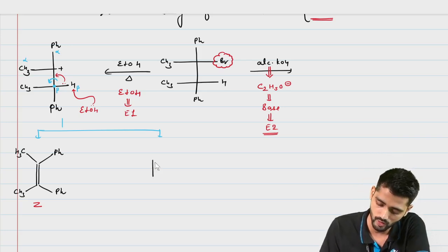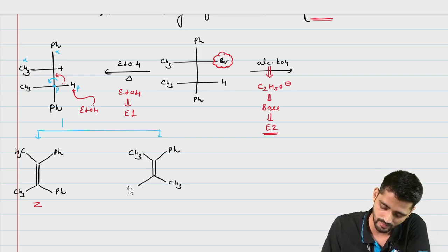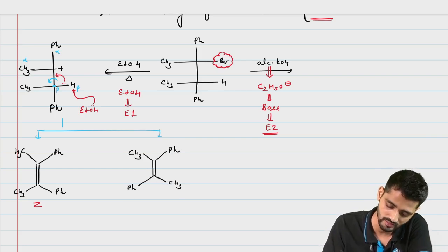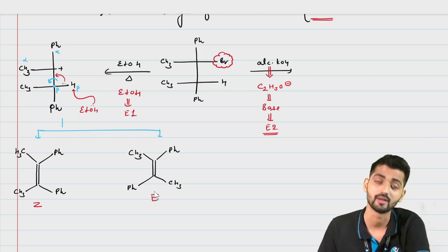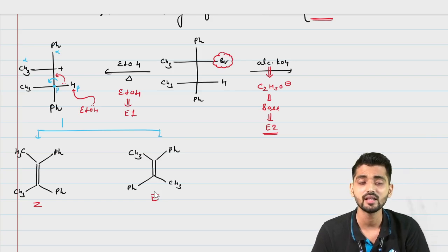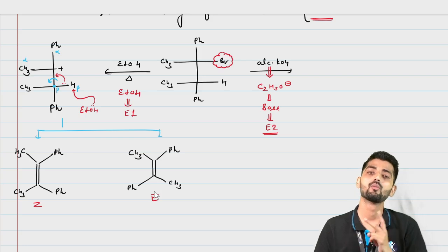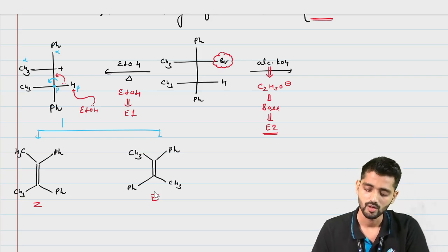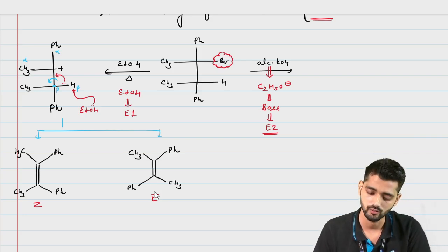Let's suppose we first form the Z isomer of the alkene. The carbocationic intermediate's single bond can undergo rotation. When the rotation takes place, the second isomeric form of the alkene is formed — this time CH3 was here and Ph here, but due to bond rotation CH3 has come adjacent to the CH3 and the isomeric form developed is the E isomer. That is the reason E1 elimination always leads to both alkene isomeric forms, whereas E2 elimination leads to only one isomeric form.